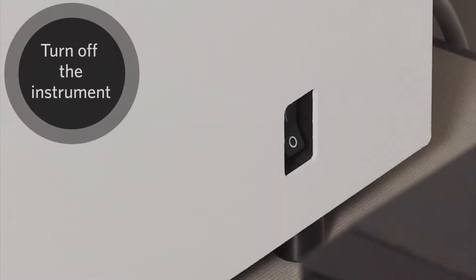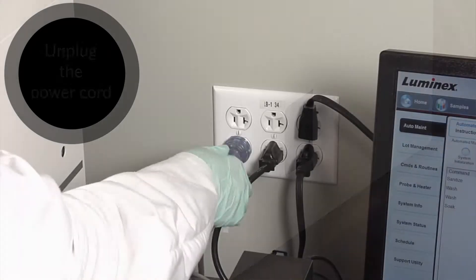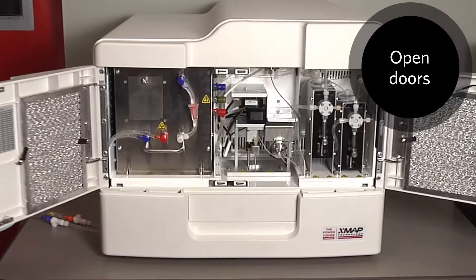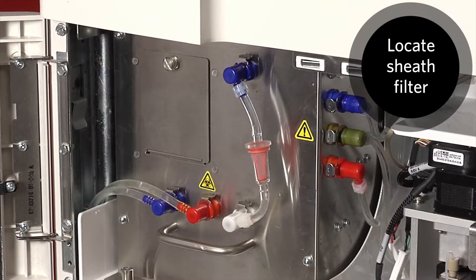Here's how to replace the sheath fluid filter. Turn off the FlexMap 3D instrument and unplug the power cord. Open the left door on the FlexMap 3D instrument and locate the sheath filter on the front of the fluidics bay.